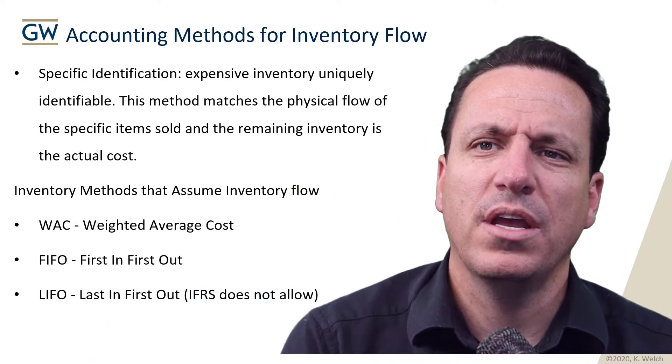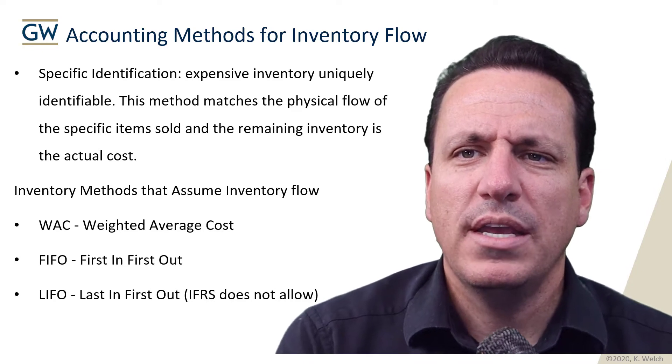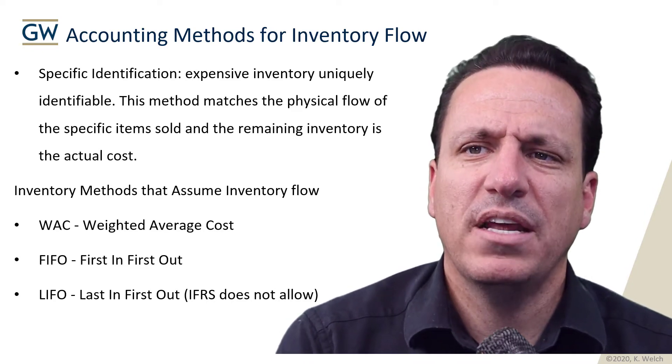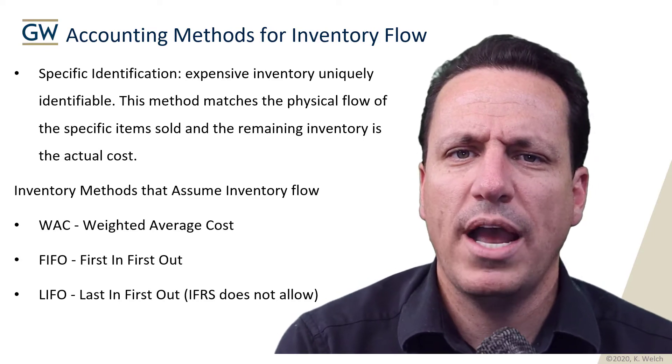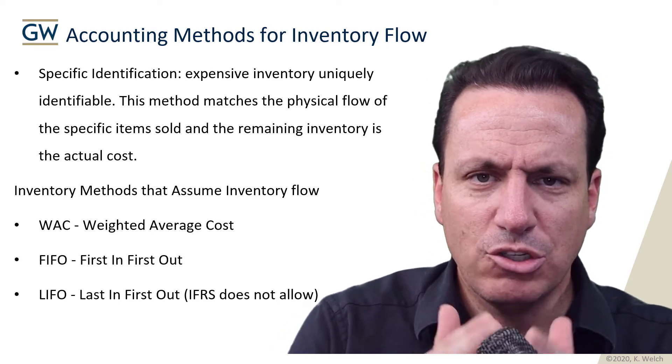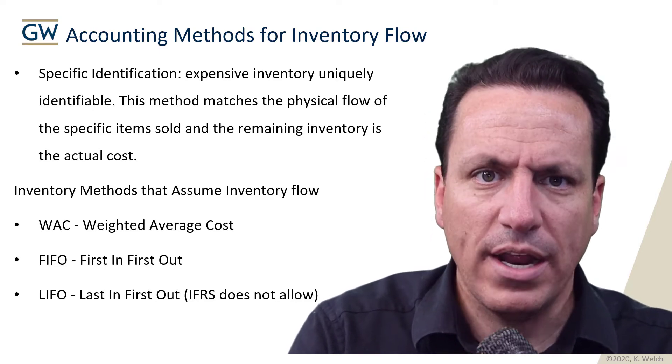In this video, we're going to talk about accounting for inventory flow using a few different inventory assumptions in accounting. There are four ways that you could account for inventory flow. The first one is specific identification — specific identification of each inventory item. This happens when you actually track every single inventory item and know where it is.